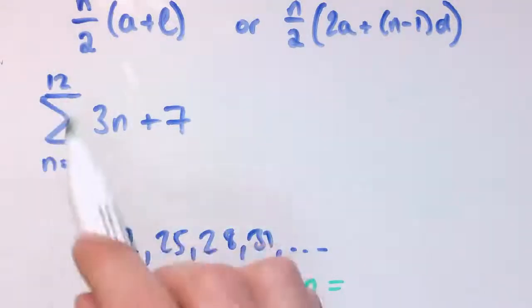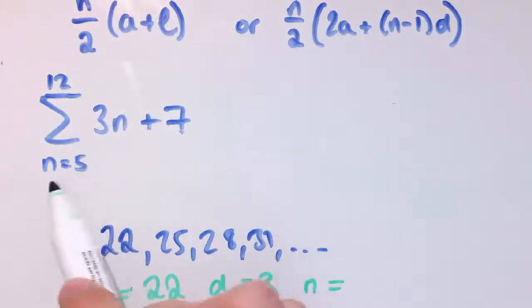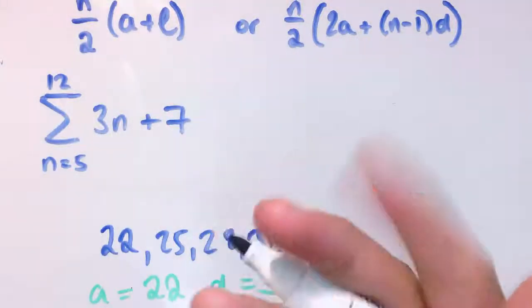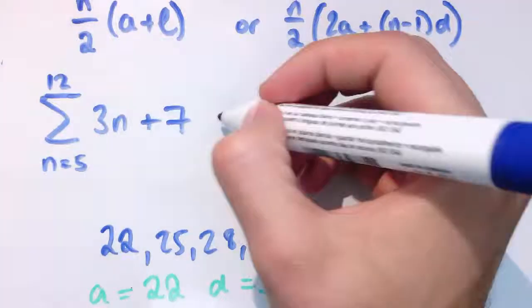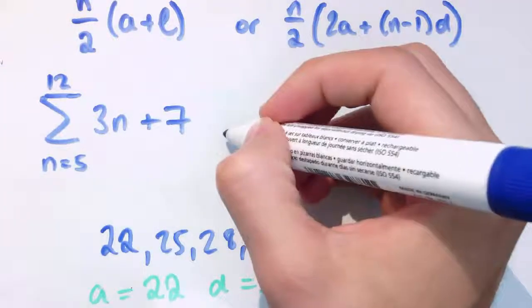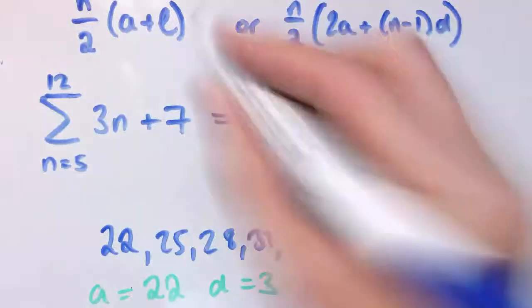Well, 1 to 12 would be 12 terms, but I don't want the first 4 terms. I don't want 1, 2, 3, and 4. So it's 12 minus 4, which is 8 terms. Notice it's not 12 minus 5, which would be 7 terms. 5, 6, 7, 8, 9, 10, 11, 12. That's 8 numbers.